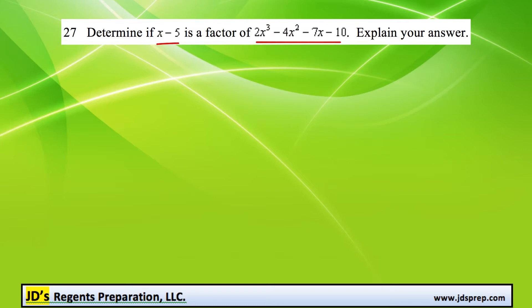The easiest one is to set the factor x minus 5 equal to 0, and that results in an x value of 5. So what we want to do is prove that this is a zero of the polynomial by replacing x with 5 and see if we do get an answer of 0.